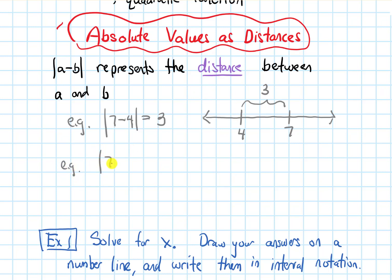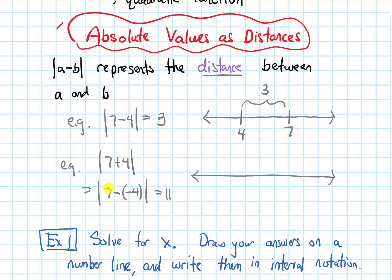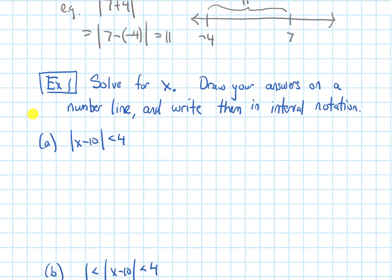What if we did the absolute value of something plus something — 7 plus 4? This looks different than the absolute value of a minus b, but I can get it in that form if I write it as the absolute value of 7 minus negative 4. This is going to be 11, and on a number line this is the distance between 7 and negative 4, which is indeed 11. Thinking of absolute values as distances will be critical to what we do later in this section. Let's do some more practice problems.